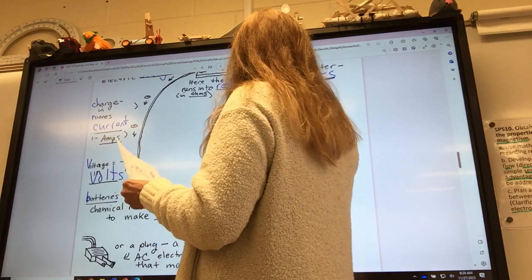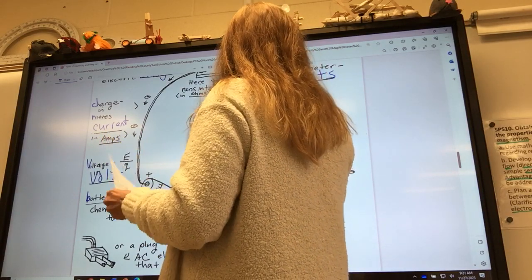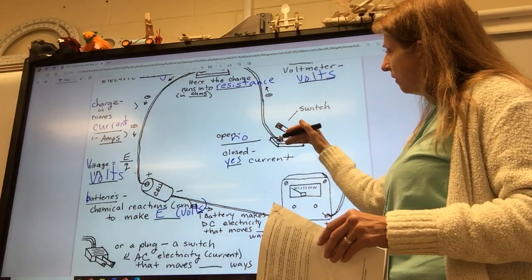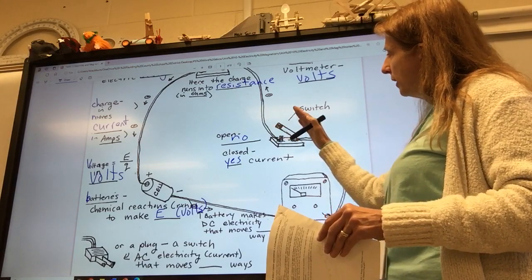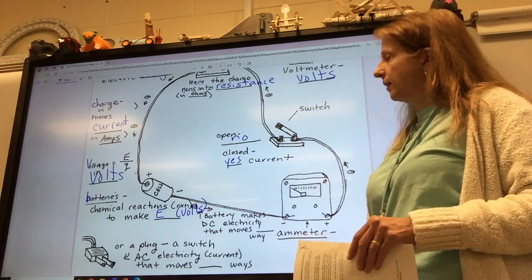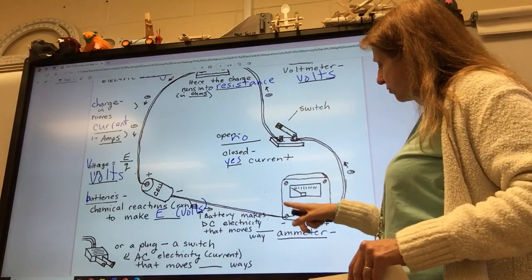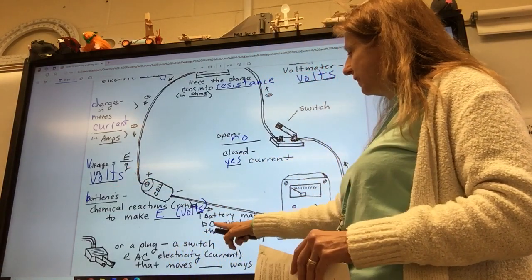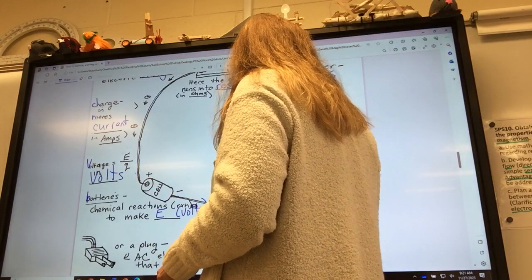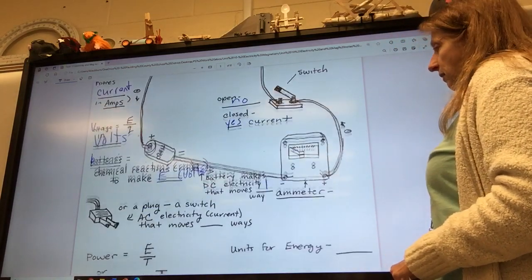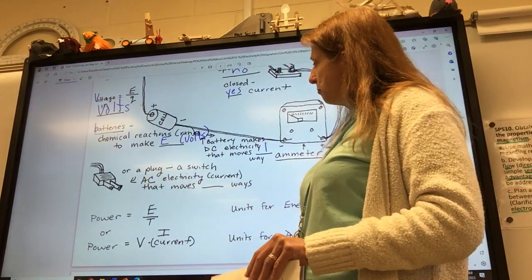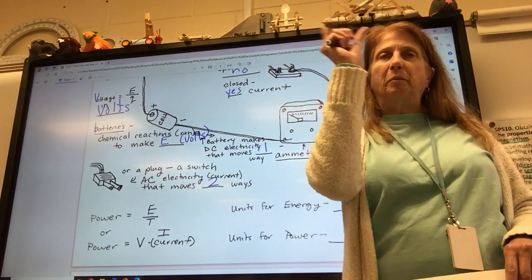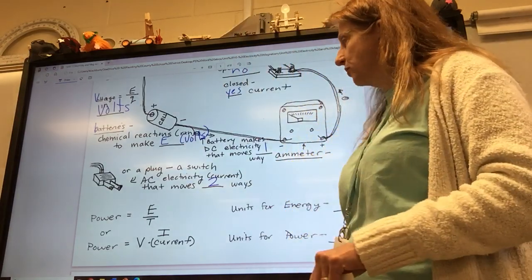You can measure how much electricity is going through a current with a voltmeter. It measures volts. You could have a switch. That's called a knife switch. If it's open, there's no current. If it's closed, yes. So, if you close this down, then the current goes through. If it's open, it breaks the path for electricity, and there's no current. Then, you can also measure the amps. You can measure the volts. You can measure the amps. And that's called an ammeter down here.